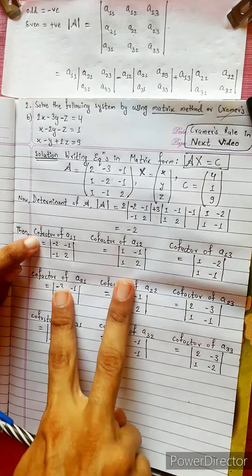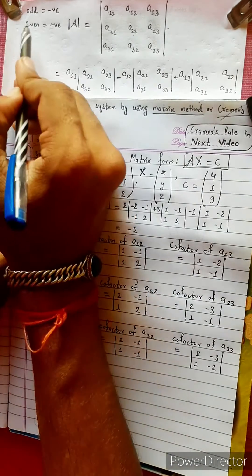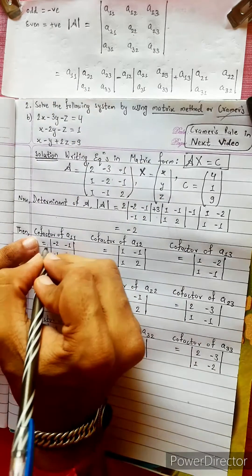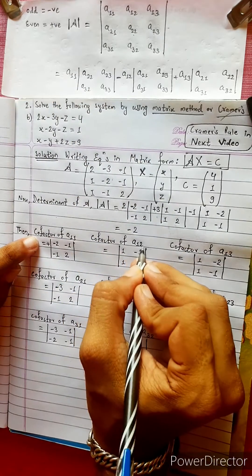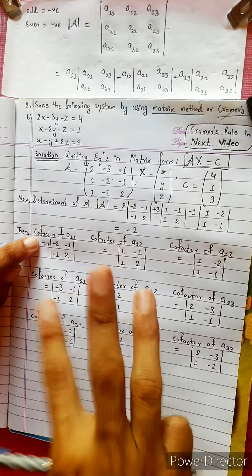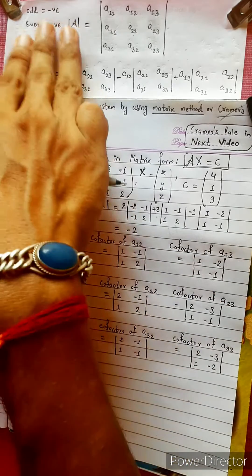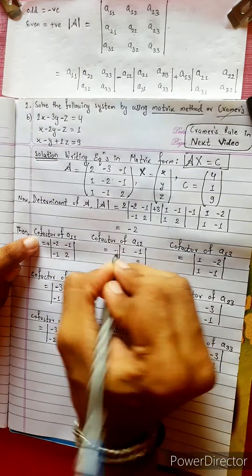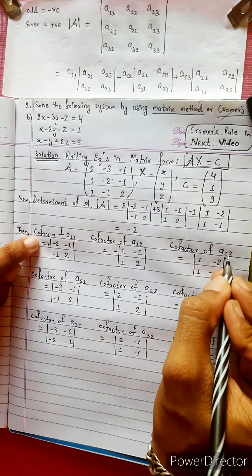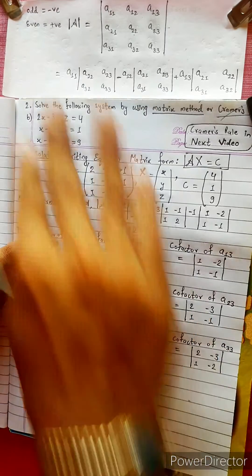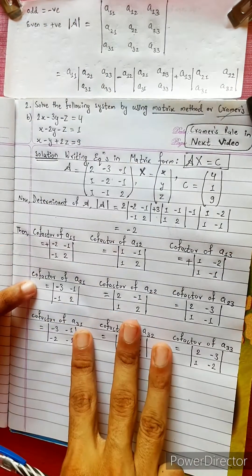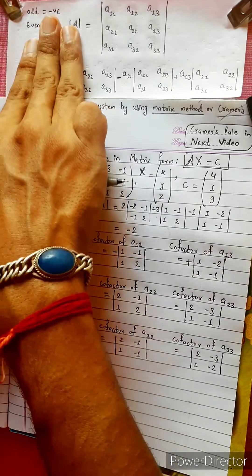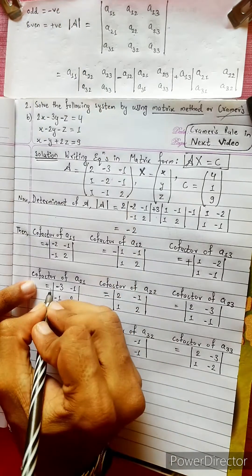A11 is 1 plus 1 equals 2. 2 is even, so even is positive. A12 is 1 plus 2 equals 3. 3 is odd, so it is negative. A13 is 1 plus 3 equals 4. 4 is even, so it is positive. A21 is 2 plus 1 equals 3. 3 is odd, so it is negative.